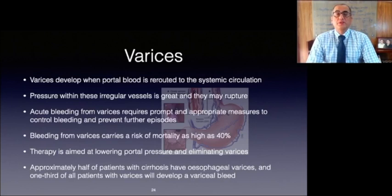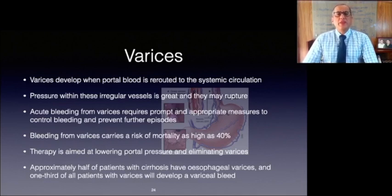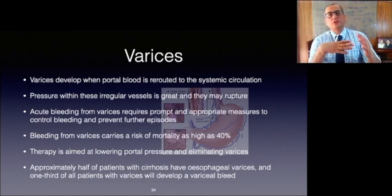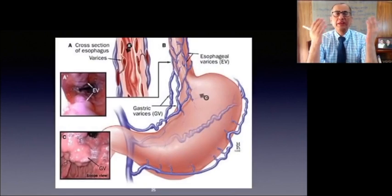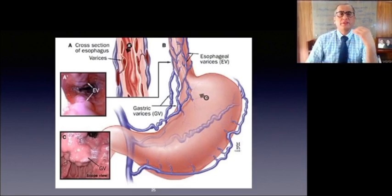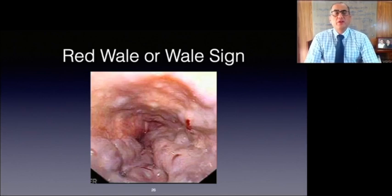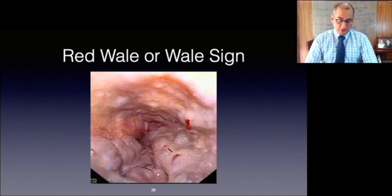Varices are varicose veins visible on endoscopy, upper GI series, or other imaging studies, occurring in the esophagus or stomach as a result of portal hypertension. The pressure within these irregular vessels is great and they have the potential to rupture. Acute bleeding from varices or non-variceal sites requires prompt and appropriate measures to control bleeding and prevent recurrent episodes. Therapy is aimed at prevention of recurrent variceal bleeding by lowering portal pressure and eliminating the varices. Here we can see an endoscopic view of esophageal varices and gastric varices. A red wale sign is an endoscopic sign suggestive of recent hemorrhage or propensity to bleed, appearing as a longitudinal red streak on the varices.